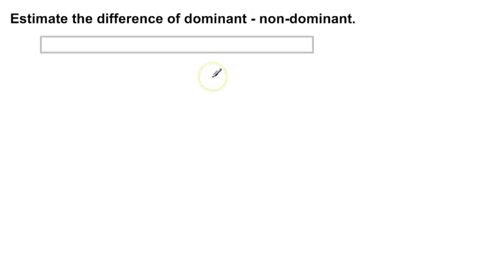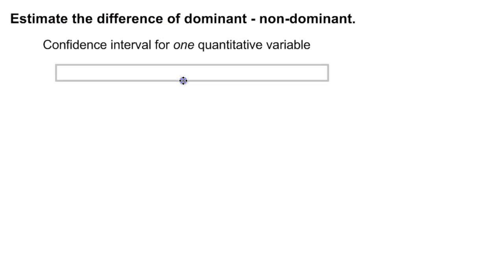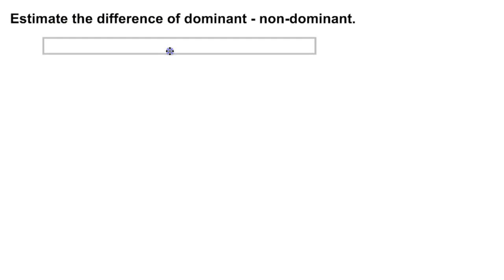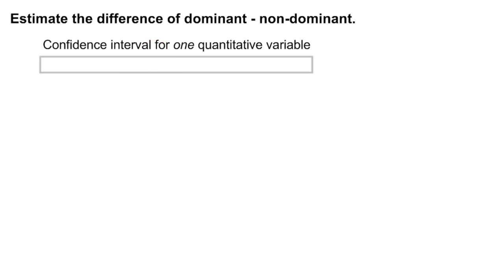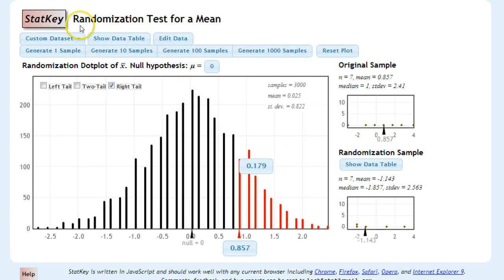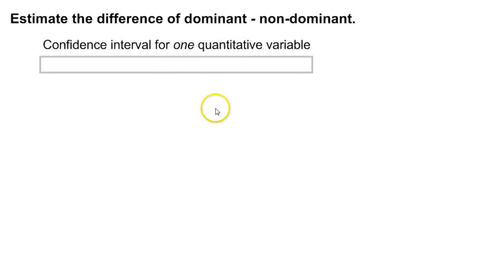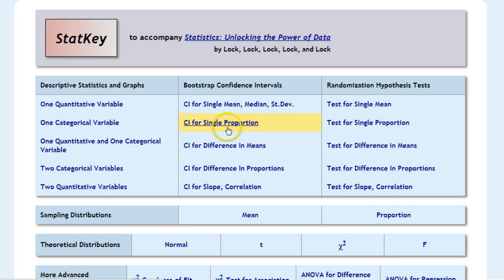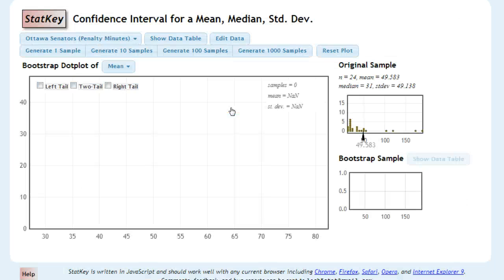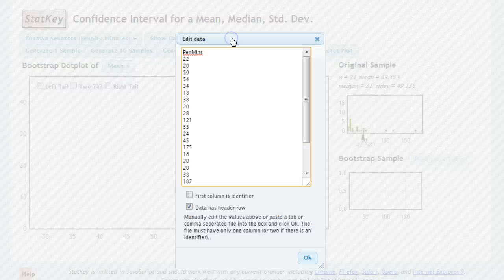Last part is being able to take that dominant and non-dominant hand problem and being able to make a confidence interval out of it to estimate the difference between the two. So we're going to do a confidence interval for a one quantitative variable just as we had done much earlier in the course.